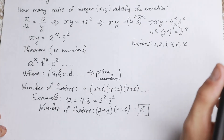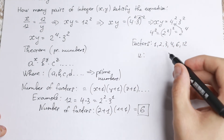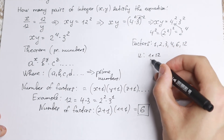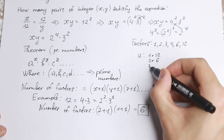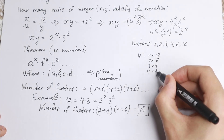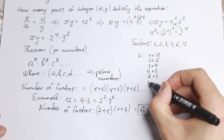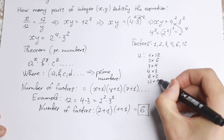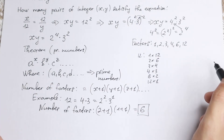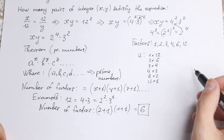So 12 can be written in 6 ways. As you can see, we can write it as 1×12, 2×6, 3×4, and in reverse: 4×3, 6×2, and 12×1. We can easily find this number of factors using the theorem.